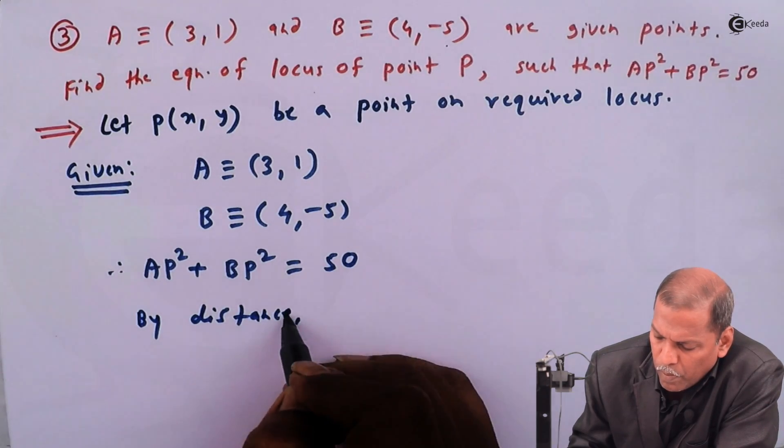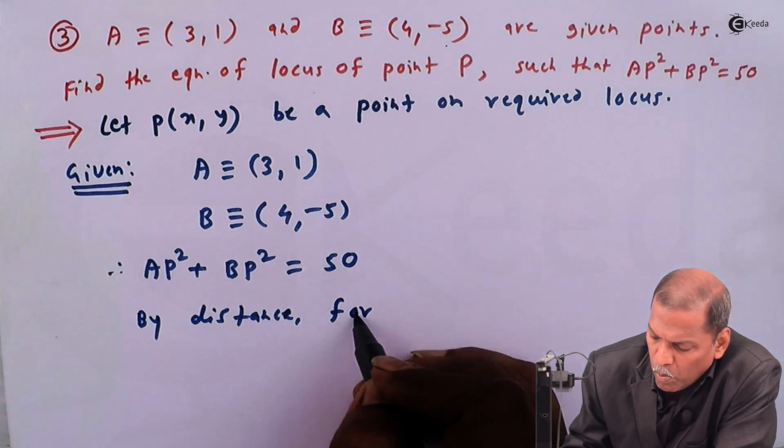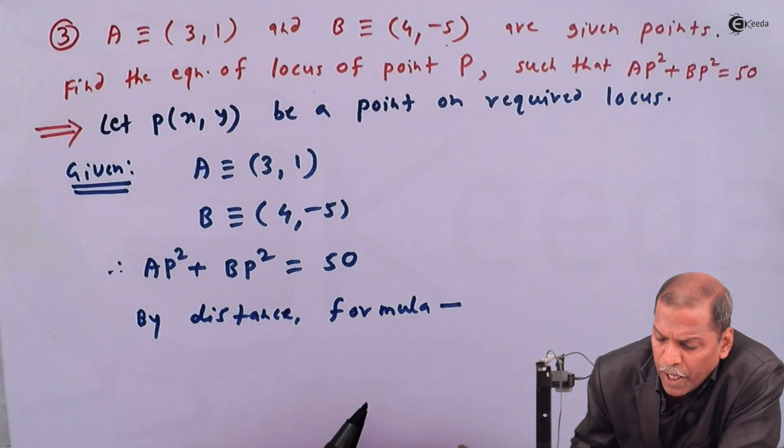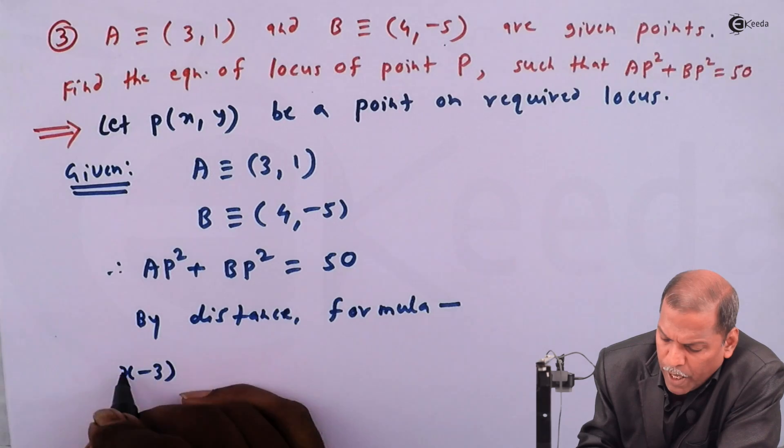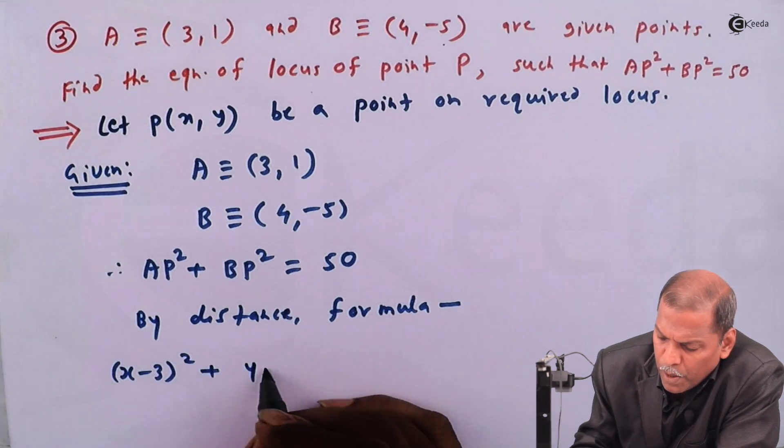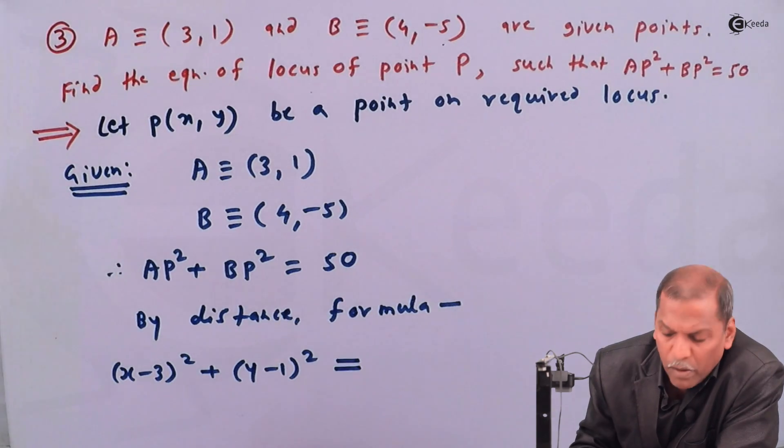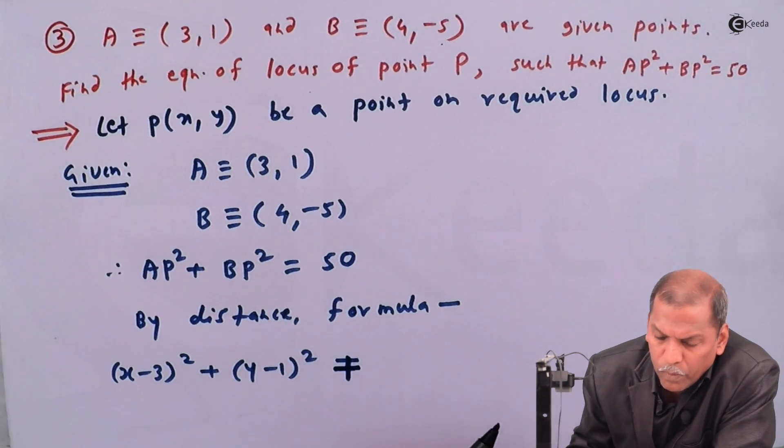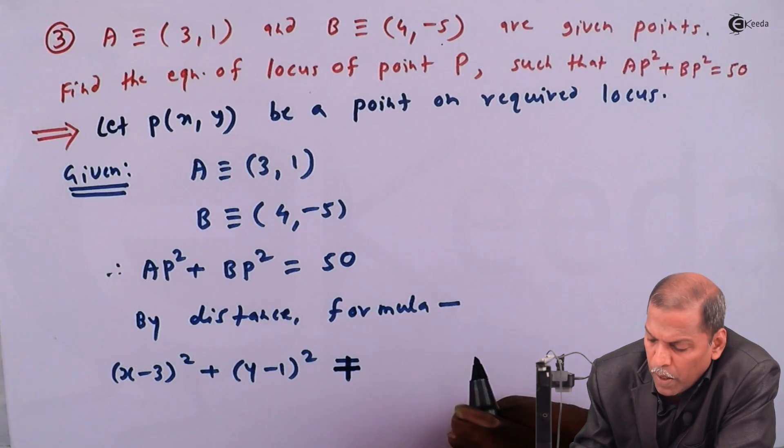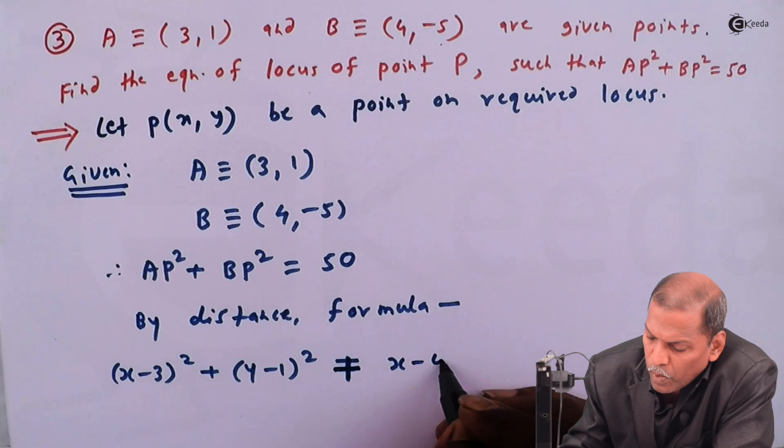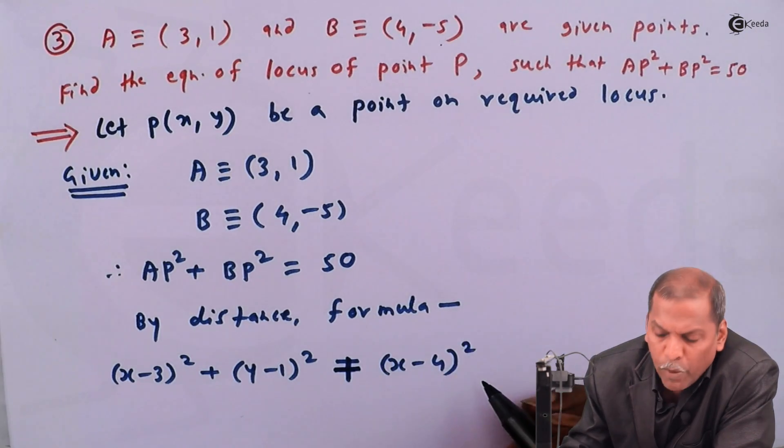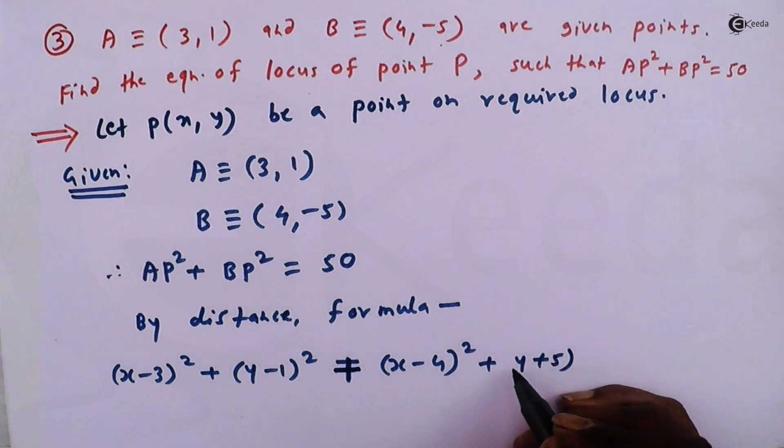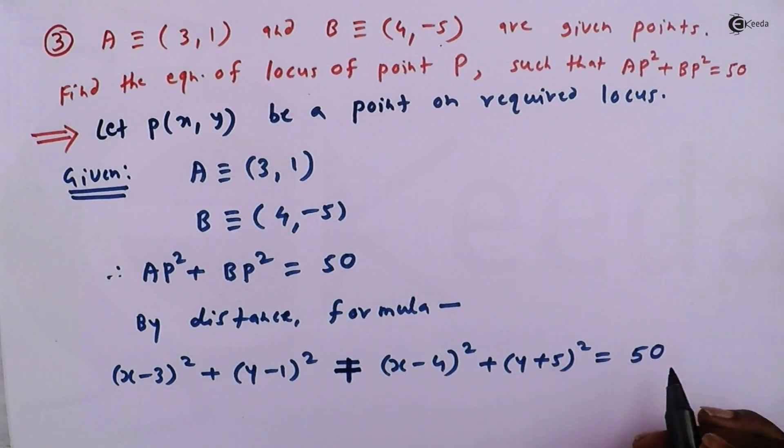First we apply distance formula between A and P. So we have (x - 3)² + (y - 1)². So this is between A and P. Then plus, now we apply the distance formula between B and P. So we get (x - 4)² + (y - (-5))², that is (y + 5)², and that equal to 50.